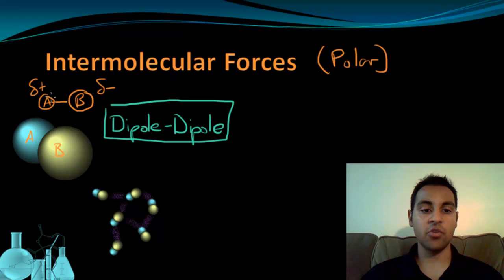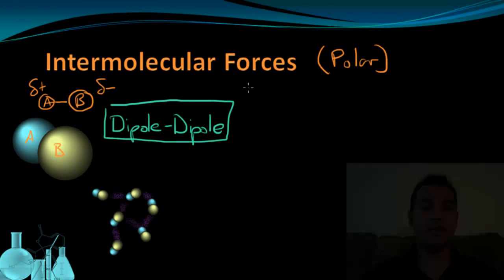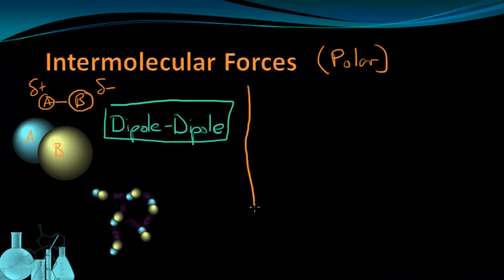Because a dipole of one molecule is attracted to the opposite dipole in another molecule. Now because polar molecules only have a partial positive and a partial negative charge, the attraction between them is significantly weaker than the attraction we see between ions in an ionic crystal. Let's take a look at a special case of dipole-dipole interaction.